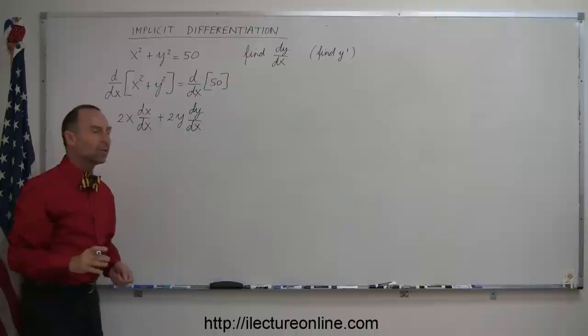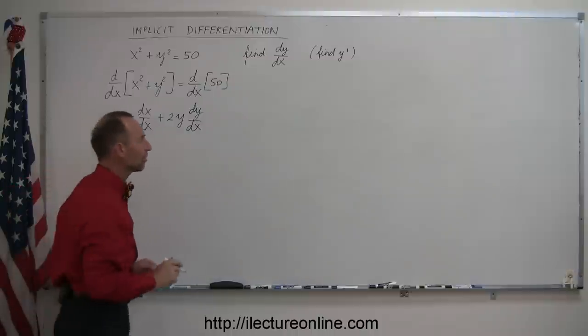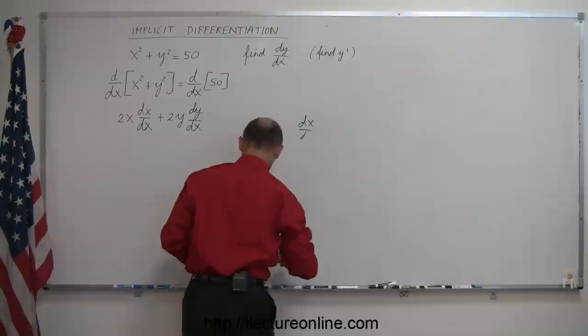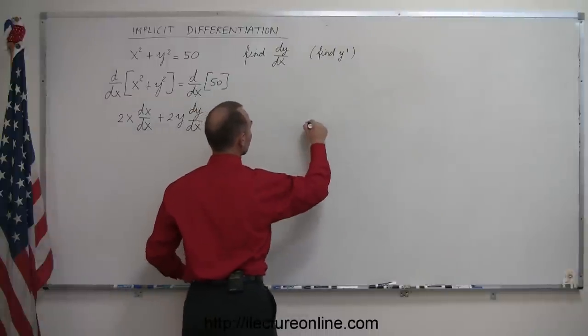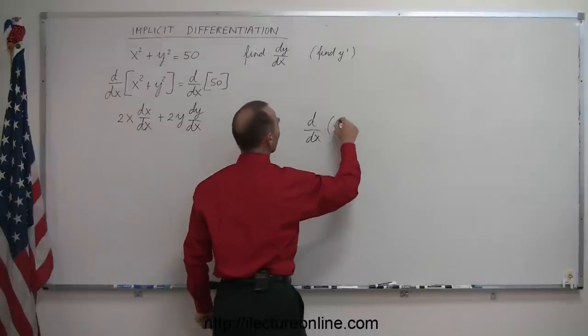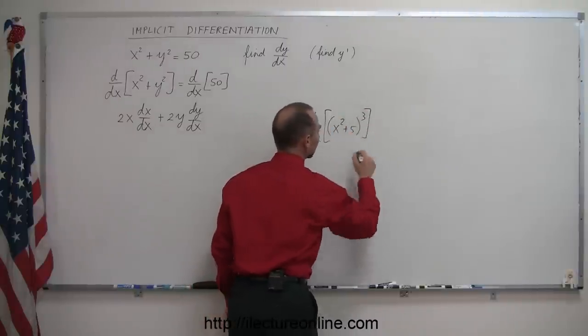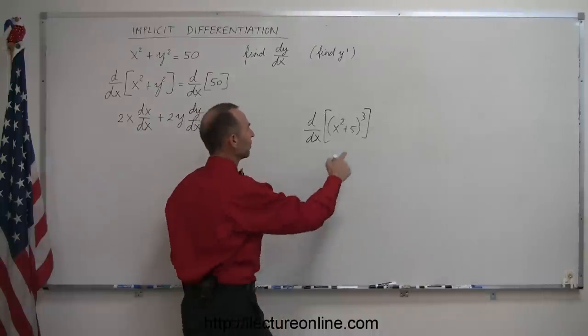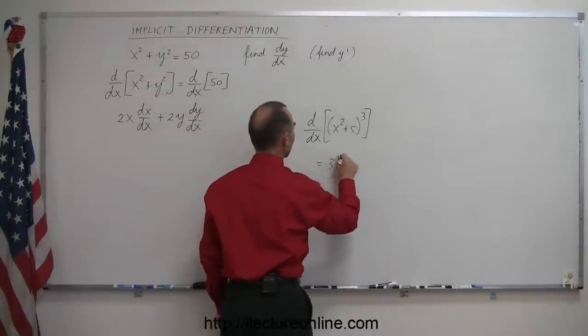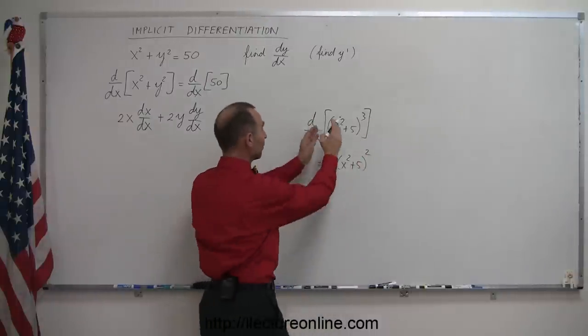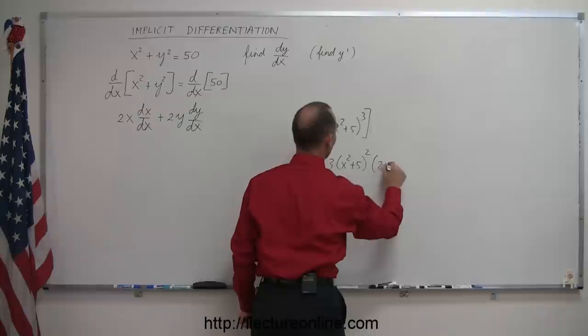It's kind of like using the chain rule. And let me show you a quick example. If I take the d/dx of, let's say, (x² + 5)³, I know how to do that. I simply take the exponent. This is 3 times (x² + 5)² times, of course, the derivative of what's inside. So that would be 2x.